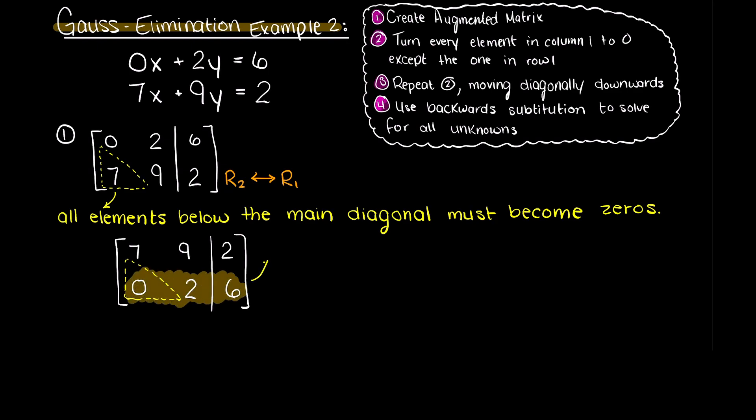In our new equation 2, we have 2y equals 6, therefore y is equal to 3. Now, we can use this newly found y variable to solve for our unknown x variable using equation 1.